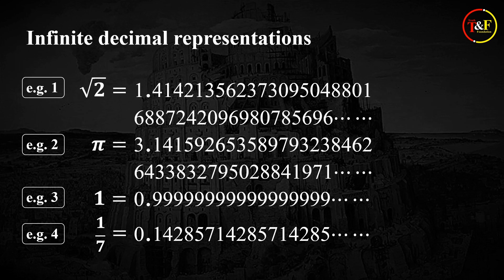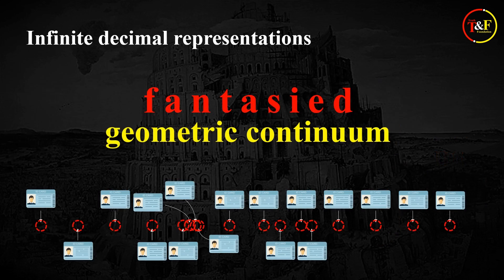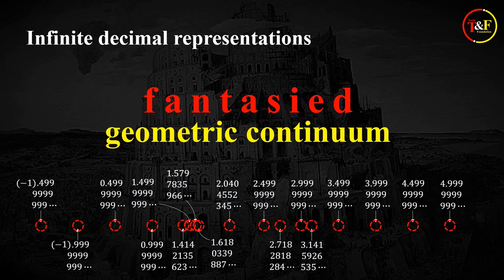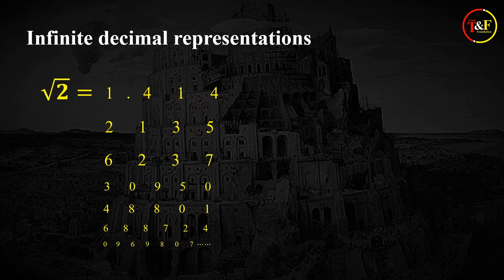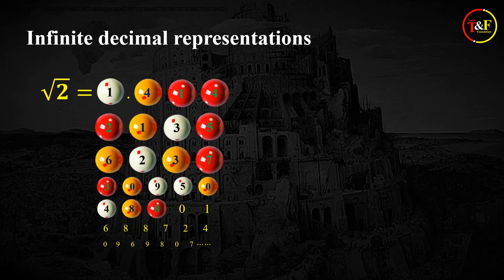So these infinite decimal representations are the new definition — the new identity — of rational and irrational numbers. Now, to every point on this geometric continuum corresponds an infinite decimal representation. At this point, however, we have to ask an important question: are these infinite decimal representations really acceptable? As you can see, an infinite decimal representation literally involves infinity. More specifically, it is a collection of infinitely many entities. Is there something in reality that corresponds to this kind of concept?